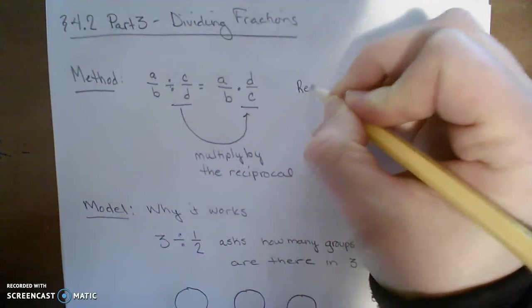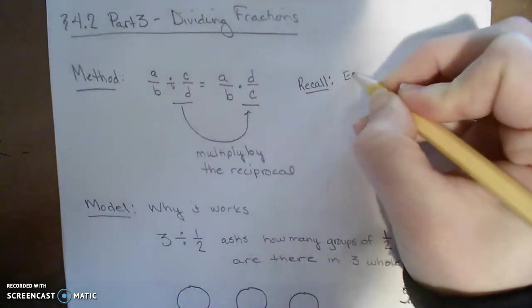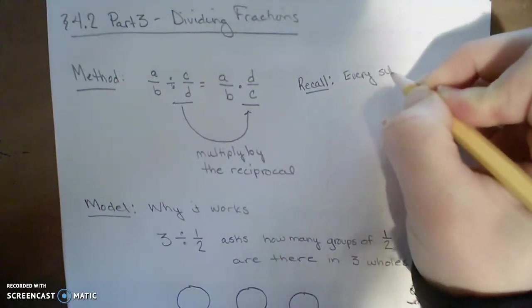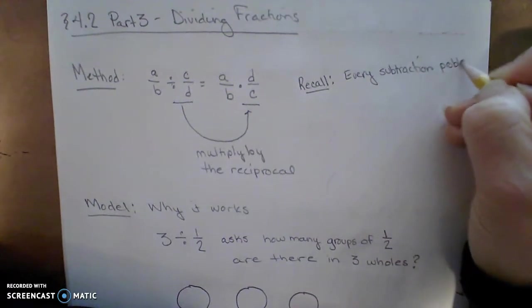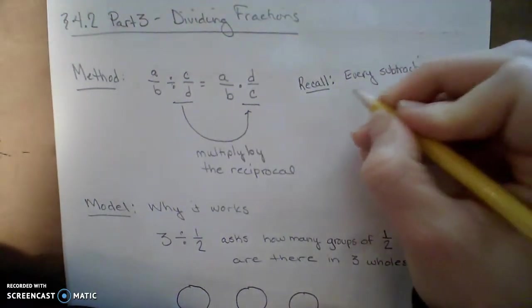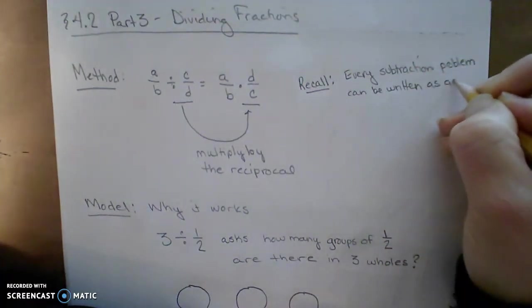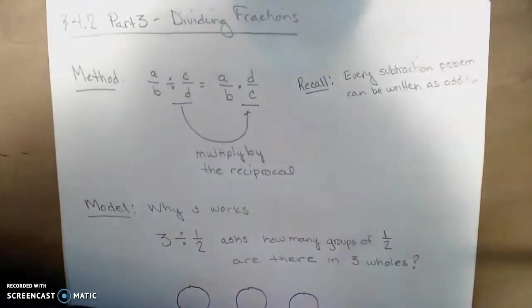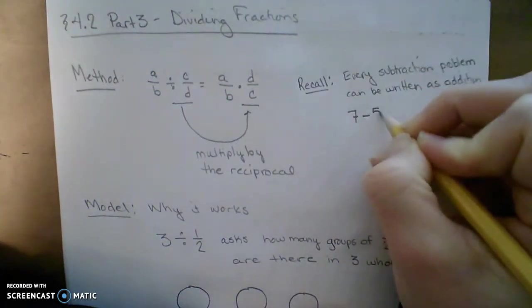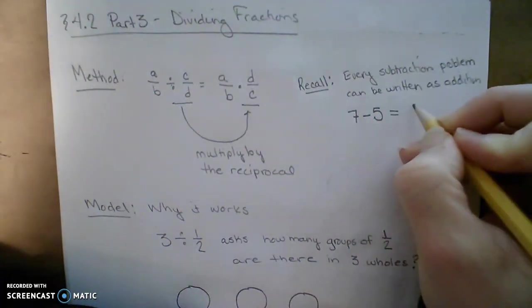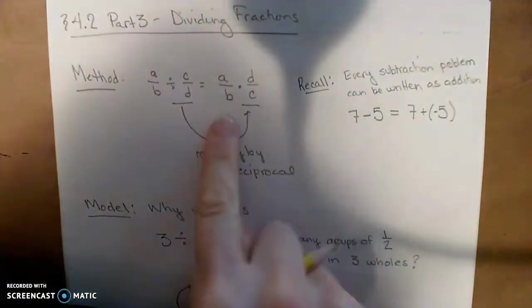This should be really familiar. Recall that when we talked about subtraction, we could rewrite every subtraction problem can be written as an addition problem when we think about negative numbers. So for example, if I had something like 7 minus 5, that could be rewritten as 7 plus negative 5, or the opposite of 5. So this should look really familiar.